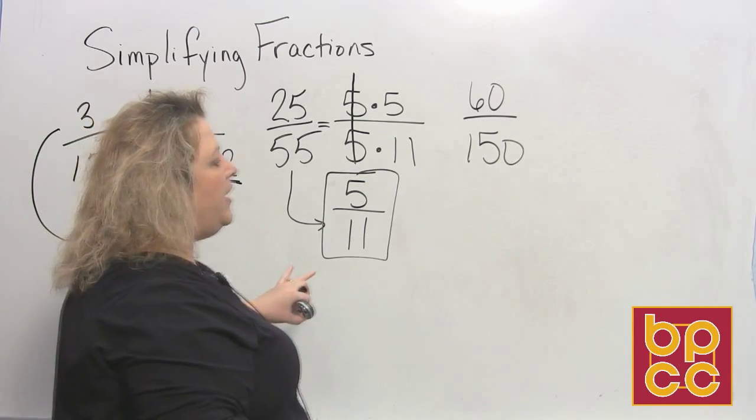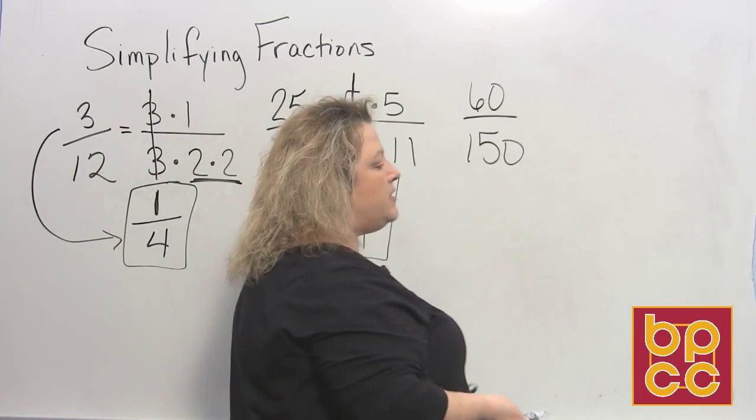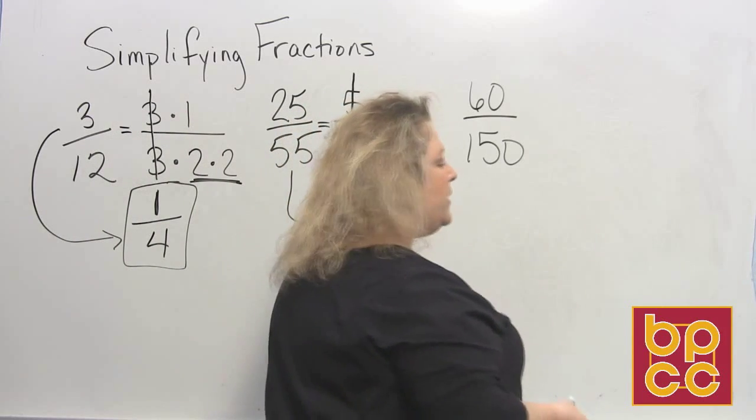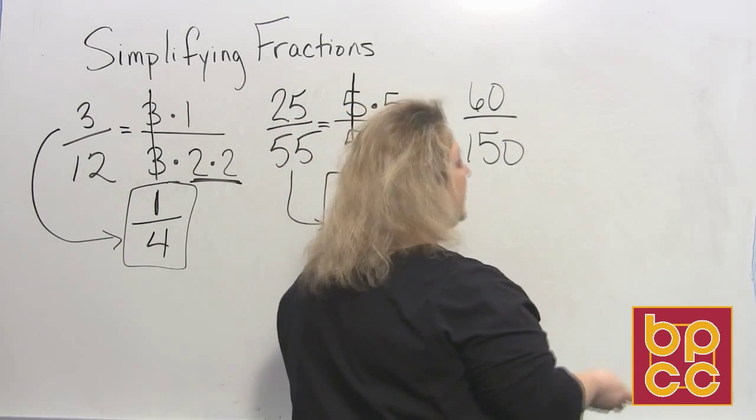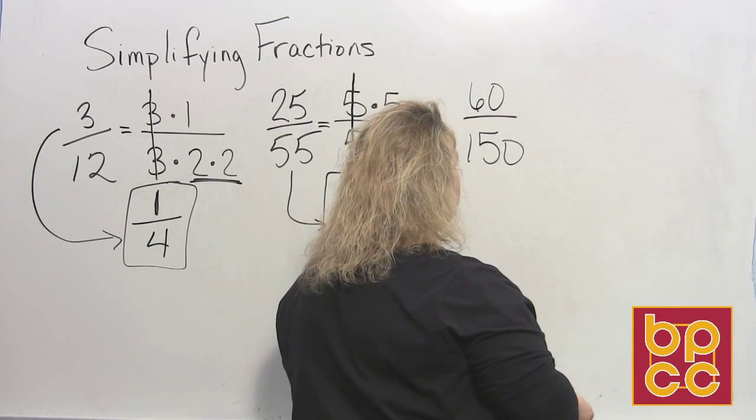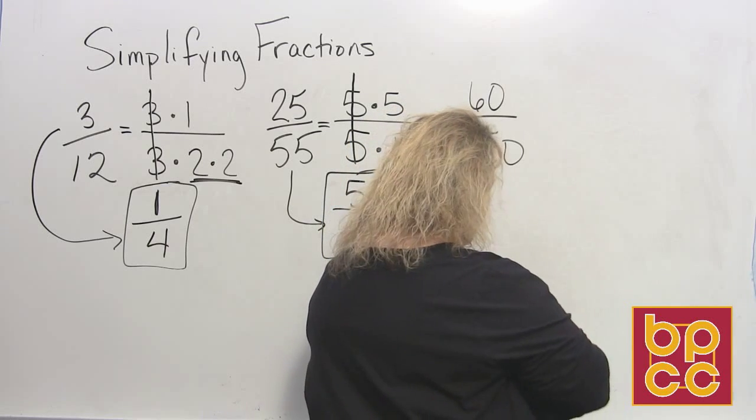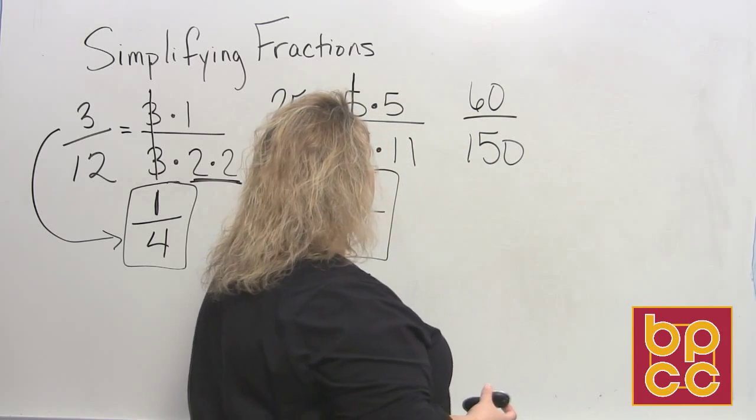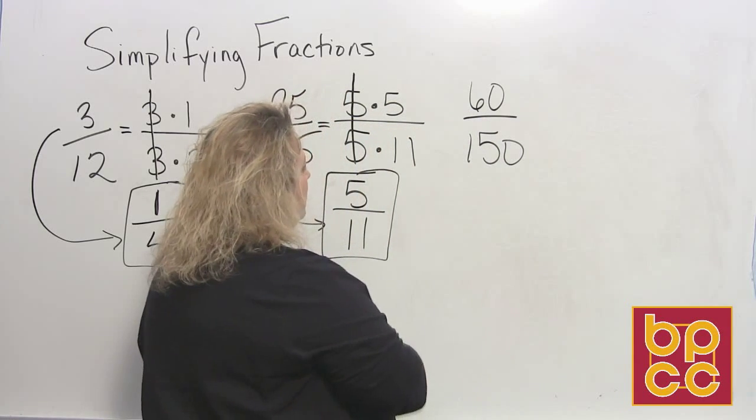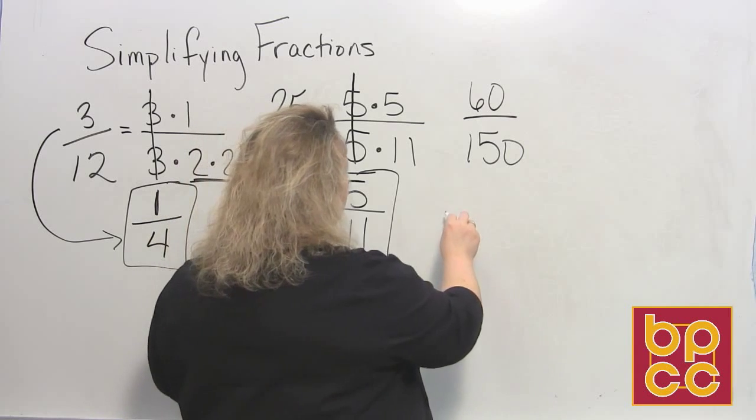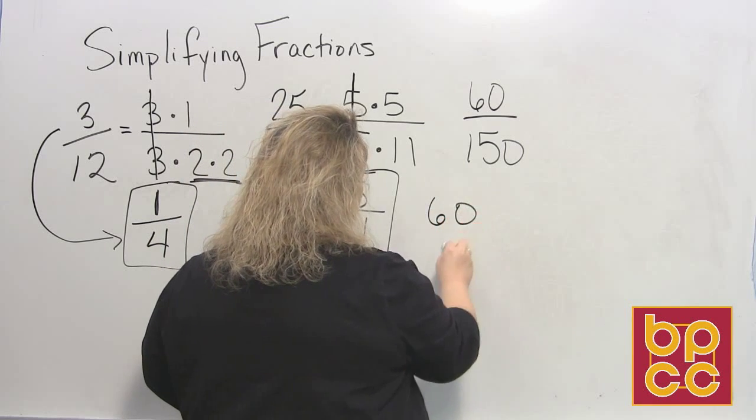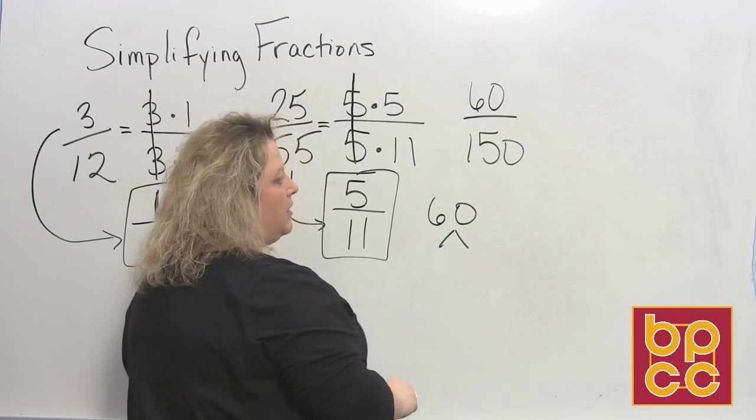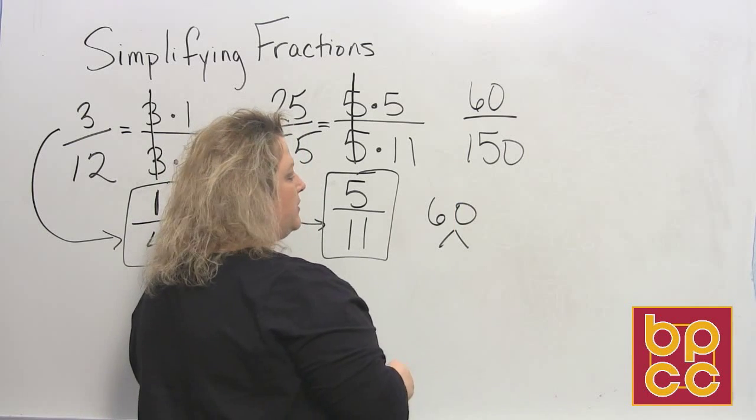So those two aren't so bad. But when we get to this one, 60 over 150, we need to do a little more factoring in order to get these the way we want them. So what I'm going to do is I'm going to erase these. No, I'm not. I'm going to write this down here, 60. And let's do a factor tree for 60 before we write our prime factorization up there.